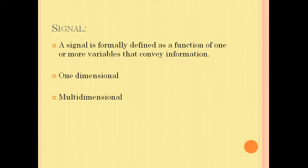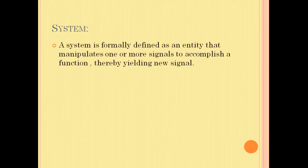A system is formally defined as an entity that manipulates one or more signals to accomplish a function, thereby yielding a new signal. A simple example is a speech signal.